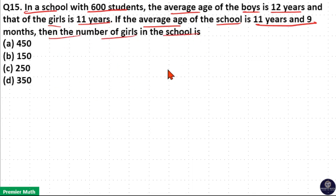This question can be done in three different ways. Method 1 is the ratio method. Here, number of girls plus boys is 600. Consider number of boys as B, number of girls as G, then B plus G is 600.